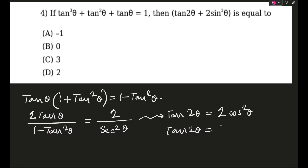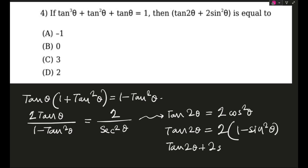I will convert cos²θ into 1 − sin²θ, which is actually the value they have asked for. So tan 2θ + 2sin²θ comes out equal to 2. This was an easy question.